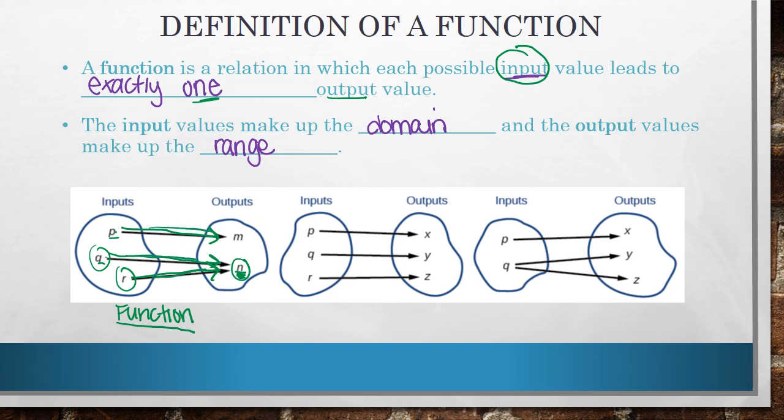Looking at the second example, this would also be considered a function because for each of these input values, they're going to only one output value. However, in this third example, this would not be considered a function. And that's because this input value of Q, it's getting mapped to two different output values. So again, to be a function for every input, it can only go to one output.